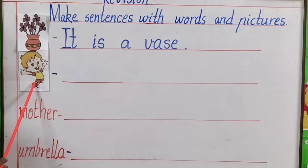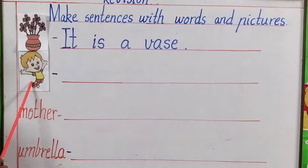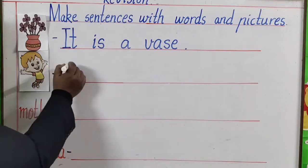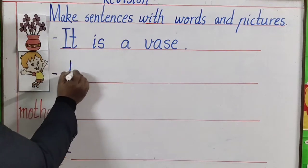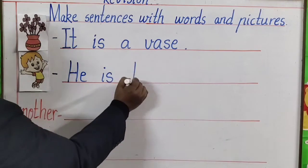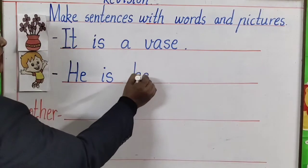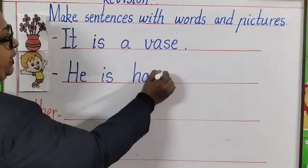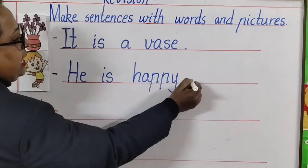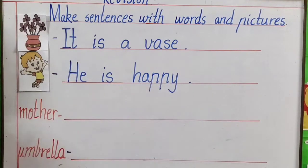Next picture — a boy, and he is happy. So frame a nice sentence: He is happy. He is happy. Spelling: H-A-P-P-Y. Happy. He is happy.